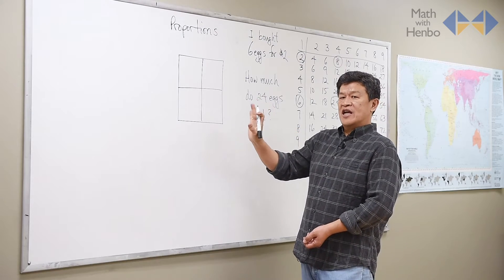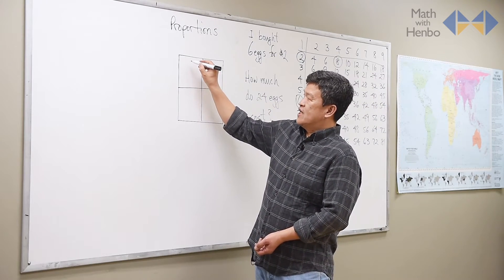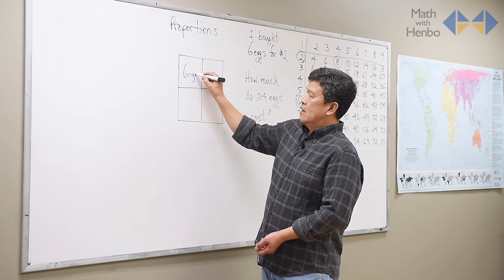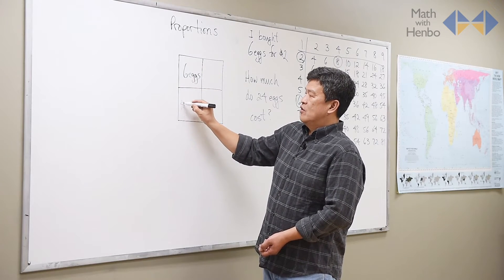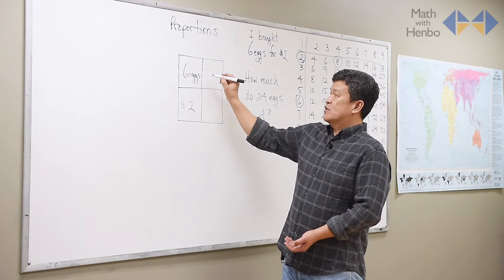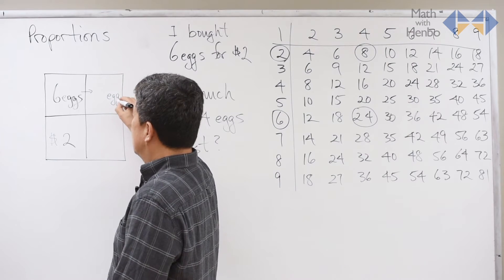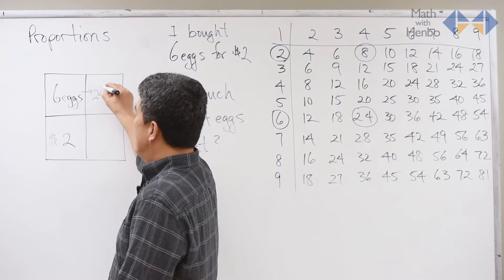So basically, all I need to do is set this up properly. So I say, 6 eggs cost me $2. So what I want to do is set it up so that same eggs, 24 eggs, appears in the same row.